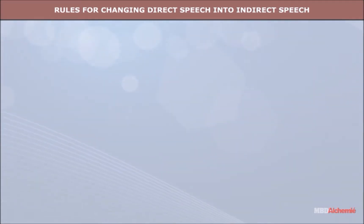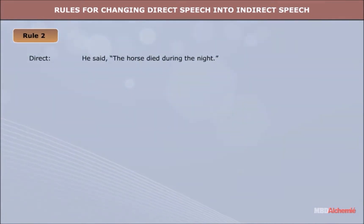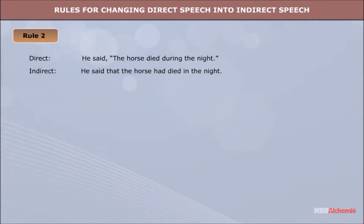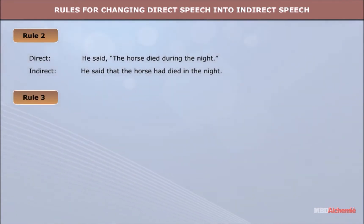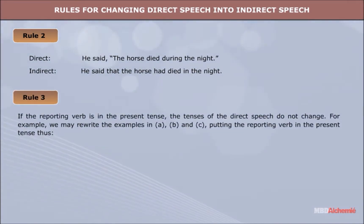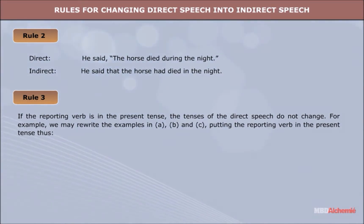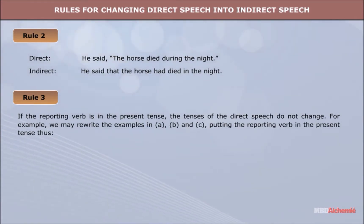Rule 2: Direct: He said, 'The horse died during the night.' Indirect: He said that the horse had died in the night. Rule 3: If the reporting verb is in the present tense, the tenses of the direct speech do not change. We may rewrite the examples in A, B and C, putting the reporting verb in the present tense.